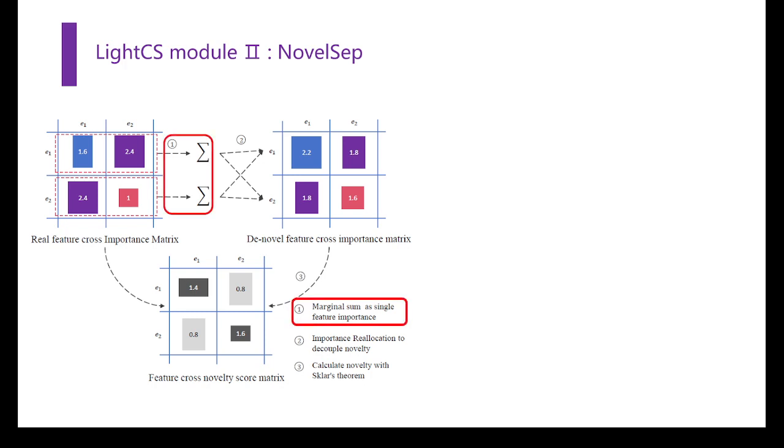NovelSep first approximates single features importance by simply marginal summing the feature crosses importance matrix, which is acquired in the first module. Then, we can estimate the theoretical value of feature crosses and calculate their novelty with the Schur theorem. This way, we can find the feature crosses with extra information gain.